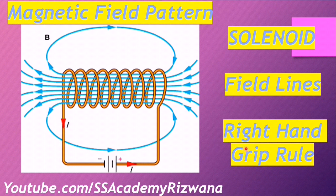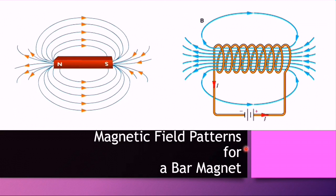A solenoid is a long coil with a large number of turns of wire, as shown in this diagram. The shape of the field is determined by the iron filings.